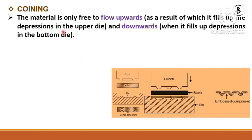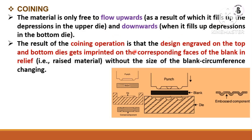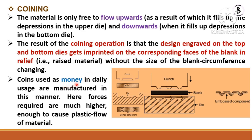In coining, the material is only free to flow upwards and downwards. As a result, it fills up the depressions in the upper die and also fills up the depressions in the bottom die. The designs engraved on the top and bottom dies get imprinted on the corresponding faces of the blank or work piece material. Coins used as money in daily use are manufactured in this manner, and the force required is much higher, enough to cause plastic flow of the material.